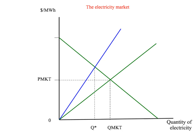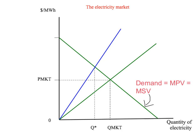Let's look again at our electricity market. We have the downward sloping demand curve for electricity, and because the externality associated with electricity will be in the production of electricity, the demand curve is also going to be the marginal private value curve and the marginal social value curve. We're putting the externality on the production side, not the consumption side. So we have our upward sloping supply curve for electricity, and that's going to be equal to our marginal private cost, but it's not going to be equal to our marginal social cost. The marginal social cost will take into account the negative externality — the extra cost to society associated with the pollution caused by the electricity production. That negative externality is measured by the gap between the supply curve and the upward sloping marginal social cost curve.